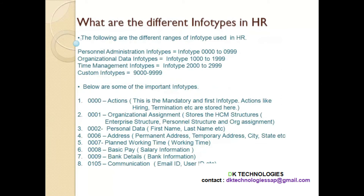What are the different info types in HR? These are the different ranges of info types used in HR. SAP has given a range of info types to be used. The first is personal administration info types, with a range from 0000 to 0999. For organizational data the range is 1000 to 1999. For time management info types the range is 2000 to 2999. And custom info types use the range 9000 to 9999.